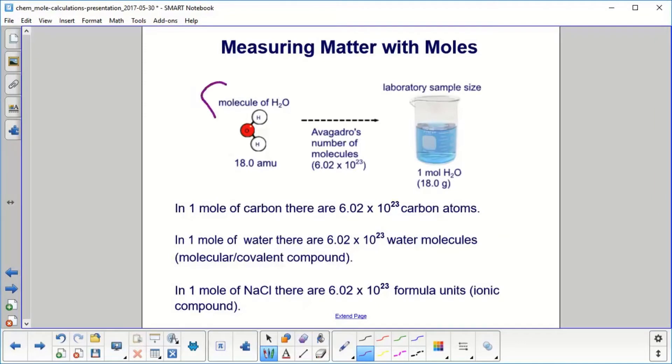Let's start with a molecule of water, which is 18.0 AMU, and we want to find out how many molecules are in one mole of water at laboratory sample size. There are 6.02 times 10 to the 23rd molecules of water. Notice the relationship between the AMU and the grams - they're the same.